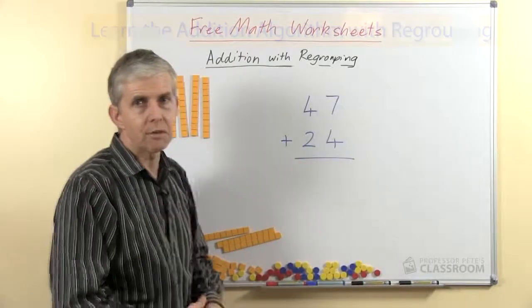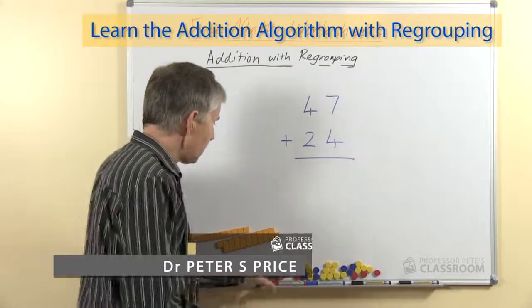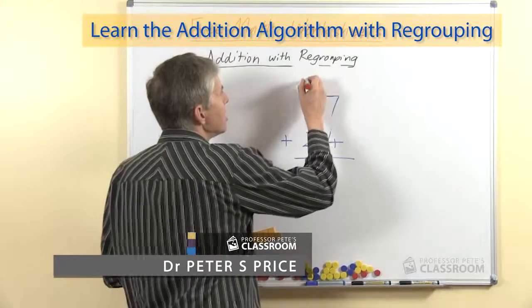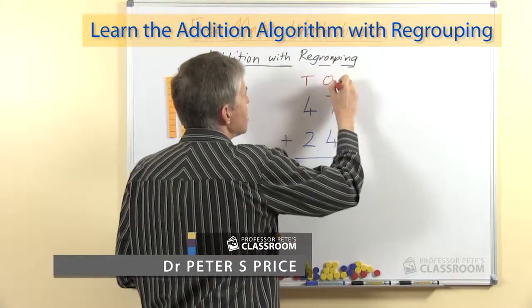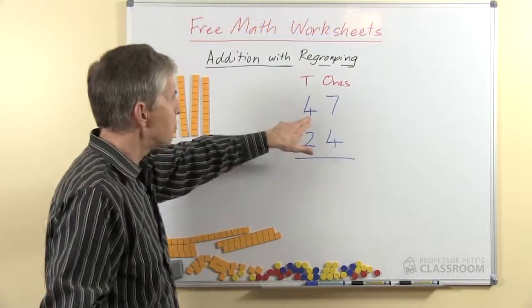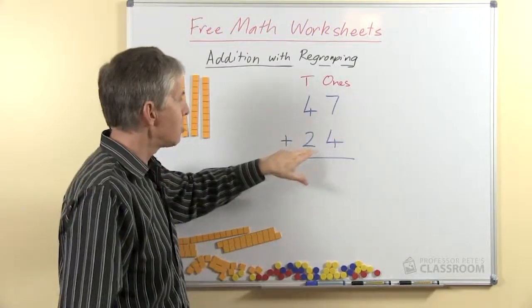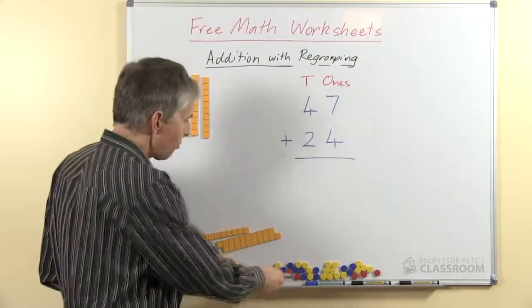So here's our question for today, 47 plus 24. Now you will know that this is the tens and these are the ones, so 47 is 4 tens and 7 ones and 24 is 2 tens and 4 ones.